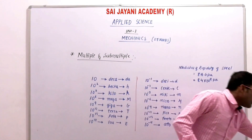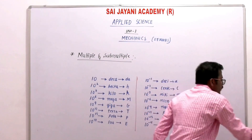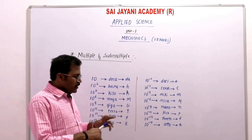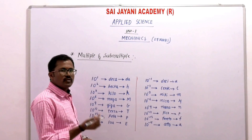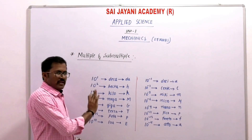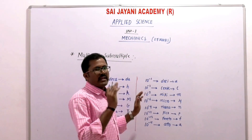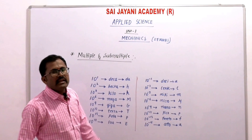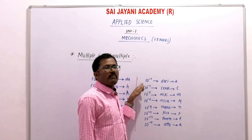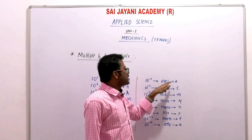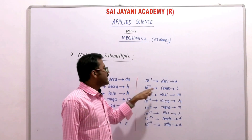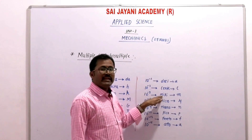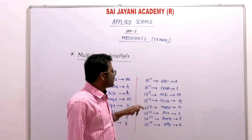Now in case of negative powers, we deal with very smaller values. 10 to the power minus 1 is deci, represented by small 'd'. 10 to the power minus 2 is centi, represented by small 'c'. 10 to the power minus 3 is milli, represented by small 'm'. 10 to the power minus 6 is micro, represented by the Greek letter mu. For example, 1 micron means 1 times 10 to the power minus 6.